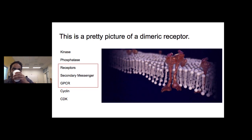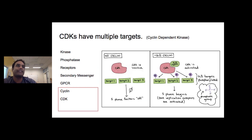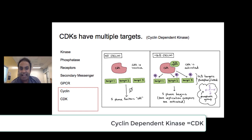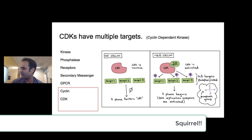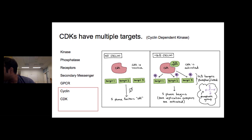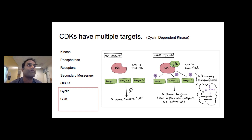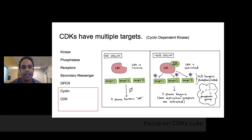Now we have cyclins and CDKs. CDK stands for cyclin-dependent kinase, so we know the kinase is going to phosphorylate something. Cyclin-dependent kinases generally phosphorylate multiple targets.